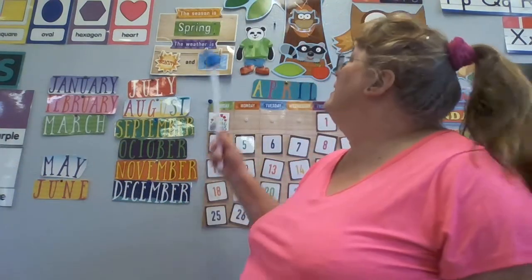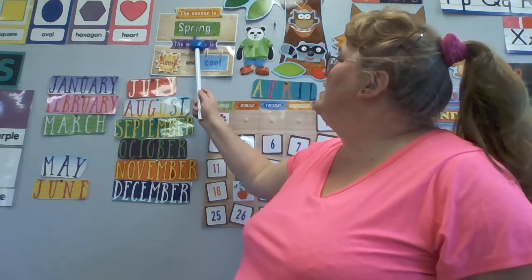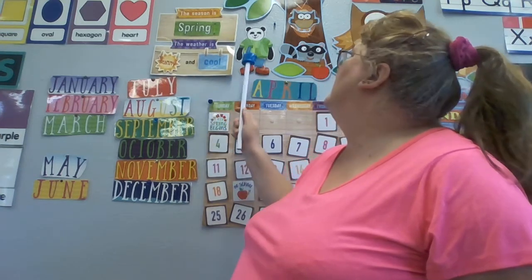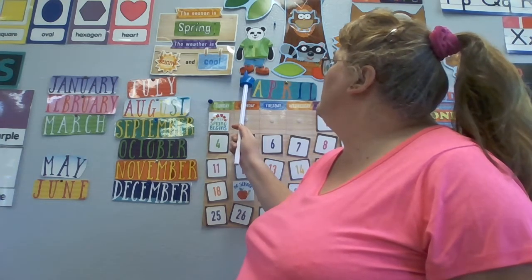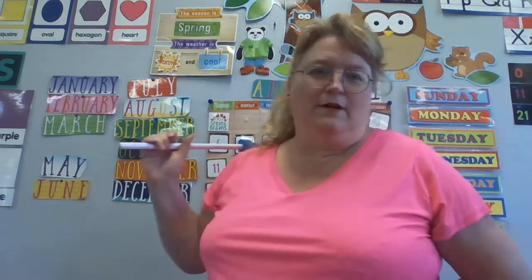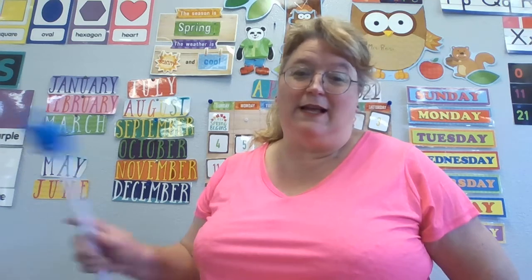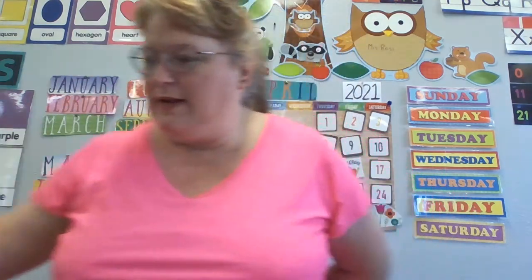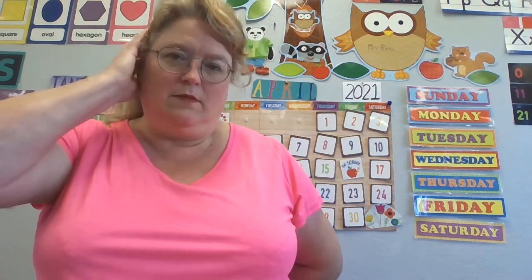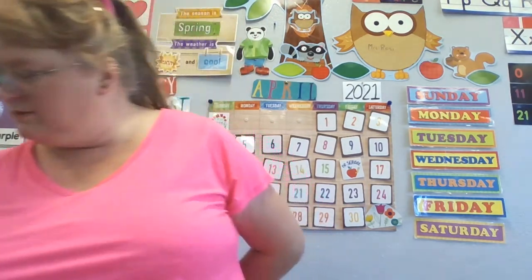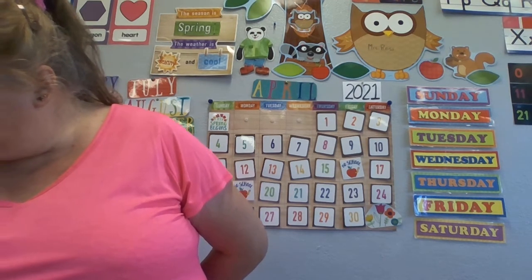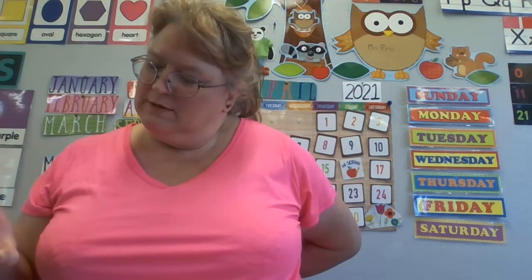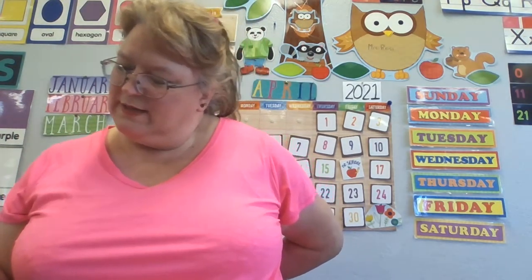The season is spring and the weather is sunny and cool. And look, Paul the panda bear is wearing a t-shirt, long pants, and tennis shoes or hiking boots — something that's protecting his feet because it's not that hot yet. It's time for the weather song, which is by Super Simple Songs. And the season song is by the Wonder Kids.